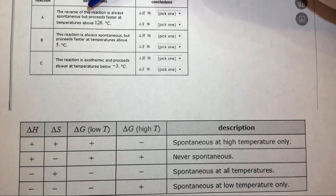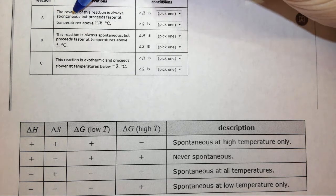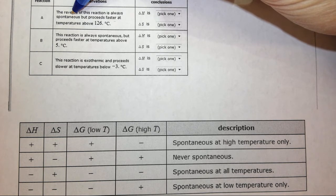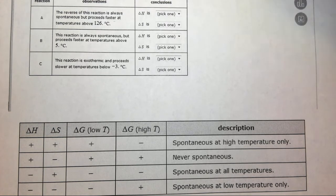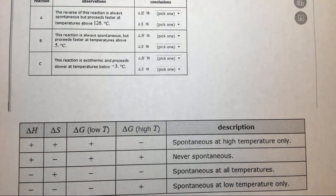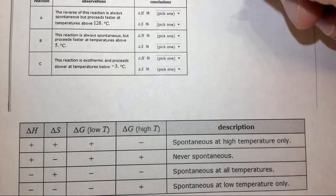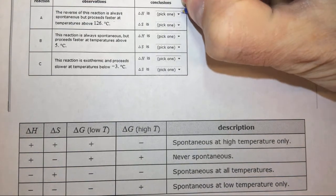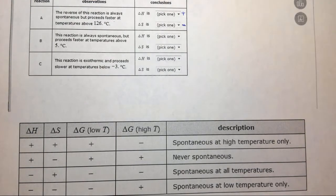The reverse of this reaction is always spontaneous. Well, if the reverse of the reaction is always spontaneous, the reaction itself is never spontaneous. When is a reaction never spontaneous? When delta H is a positive number and delta S is a negative number, because then you have a positive plus a positive, and therefore it's never spontaneous. So delta H is positive and delta S is negative.